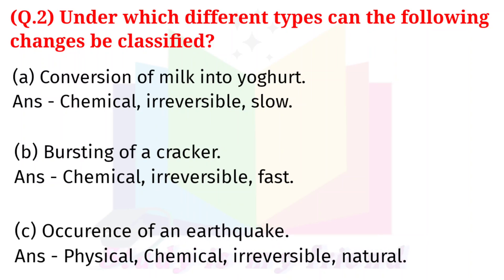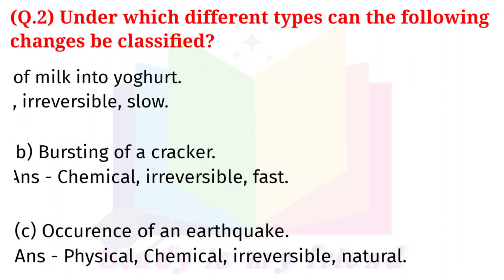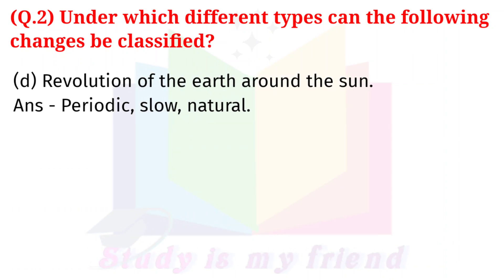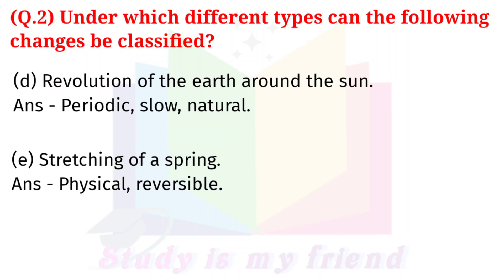C. Occurrence of an earthquake. Answer: Physical, Chemical, Irreversible, Natural. D. Revolution of the earth around the sun. Answer: Periodic, Slow, Natural. E. Stretching of a spring. Answer: Physical, Reversible.